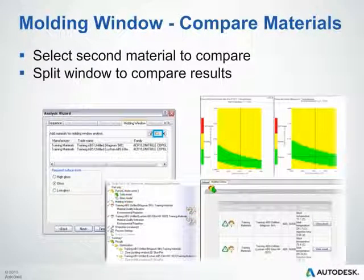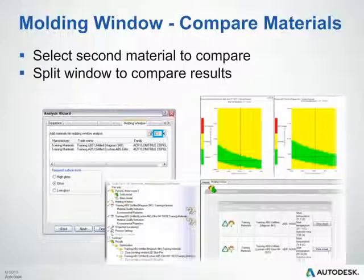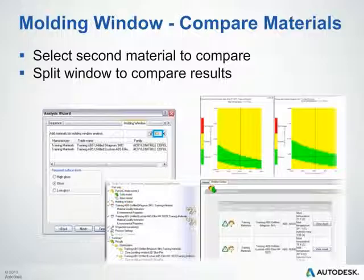You can compare multiple materials at one time. Open the analysis wizard, and on the molding window tab, you can see along the top there are multiple materials that you can drop in. You can also specify a required surface finish — high gloss, gloss, or low gloss. If you specify a high gloss, the solver will typically be biased to a higher mold temperature. If you pick a lower gloss, it will choose a slightly lower mold temperature, because higher mold surface temperatures give you a higher gloss surface finish.